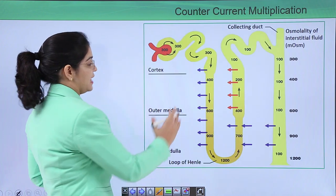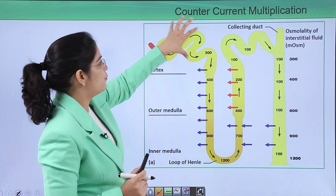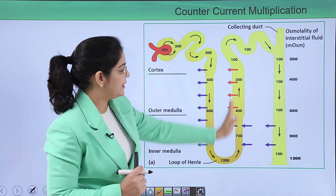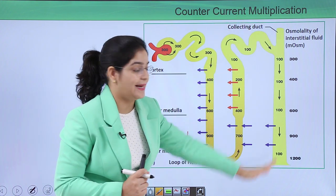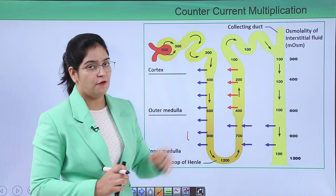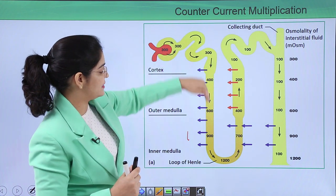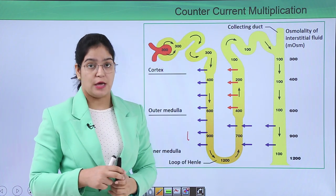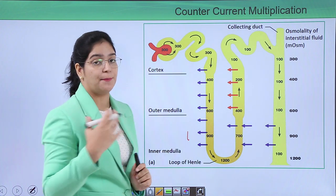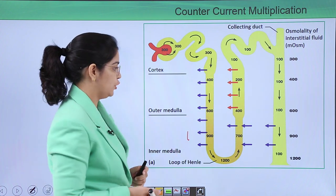This is our juxtamedullary nephron. In the juxtamedullary nephron, everything is the same: Bowman's capsule, proximal convoluted tubule, loop of Henle with a descending and ascending limb, distal convoluted tubule, and collecting duct. The only difference is that it contains a longer loop of Henle. There is a difference in permeability: the descending loop of Henle is permeable to water but not to salt, and the ascending limb is permeable to salt but not to water.